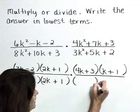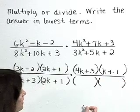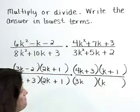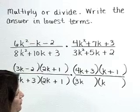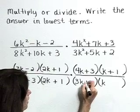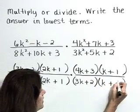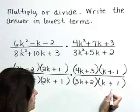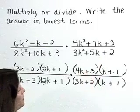Now to our last denominator. Factors of 3k squared are 3k and k. Factors of positive 2 that will work are plus 2 and plus 1. Quickly checking: 2k plus 3k gives the middle term 5k.